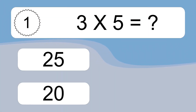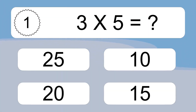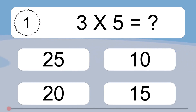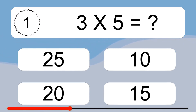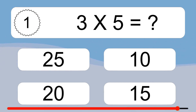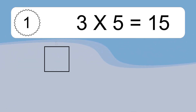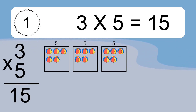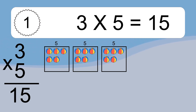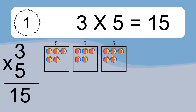3 times 5 equals what? 3 times 5 equals 15. We have 3 boxes, and each box has 5 colorful balls inside. If you count all the balls in all the boxes together, you will have 3 times 5 balls. This equals 15 balls.